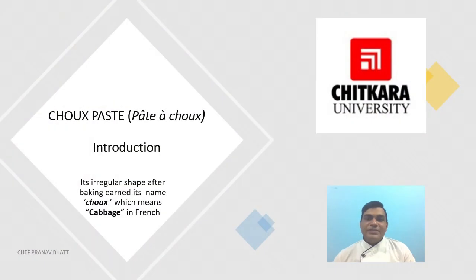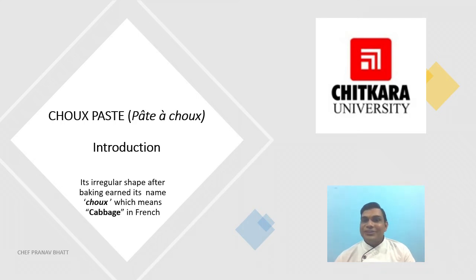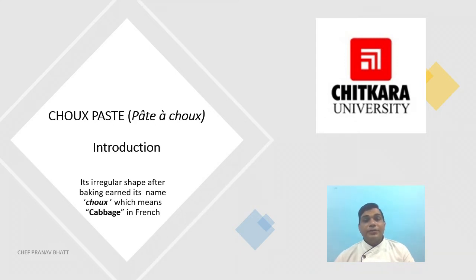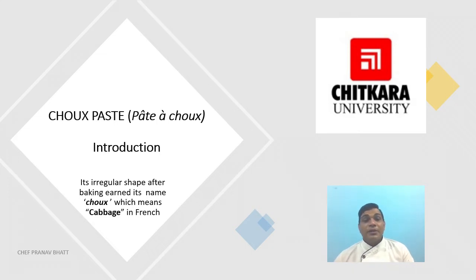Choux pastry is a rich dough made from pastry flour, water, melted butter, and egg, expressed from a pastry bag with a piping tip to form various shapes. The choux pastry dough is called panade. It is a dough that is cooked before being baked. During baking, the egg helps form a thin crust on the outside while the steam trapped inside expands, giving the pastry a puffed hollow shape.